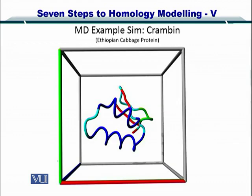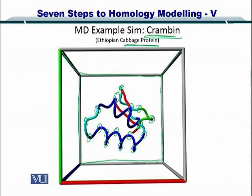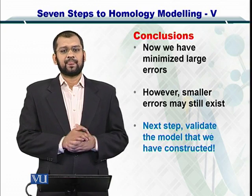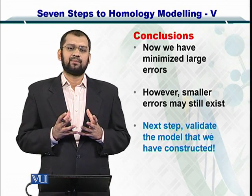Here is an example using crambin, a cabbage protein. In the box, you can see we have trapped this protein, which acts as an isolation chamber. We compute the possible conformations of the entire backbone as well as all the rotamers. By doing that, we arrive at a conformation of the protein that has the minimum energy. The minimum energy protein is the result of your prediction paradigm, and we have now optimized the protein structure.